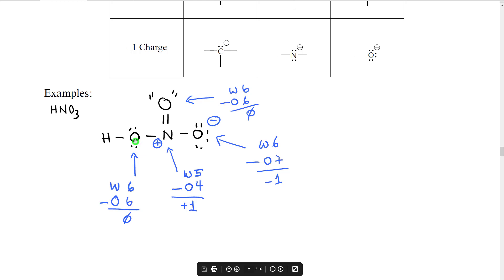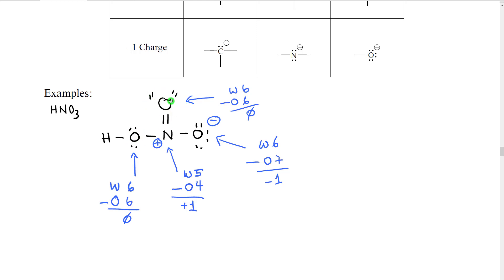Let's start with this oxygen. Oxygen wants six electrons. This oxygen owns one, two, three, four for the two lone pairs, five, six — one for each of those bonds. Wants six, owns six — zero formal charge, so this oxygen has no formal charge. If we look at the next oxygen, we have one, two, three, four for the two lone pairs, and two bonds gives it five and six. Wants six, owns six — zero formal charge.